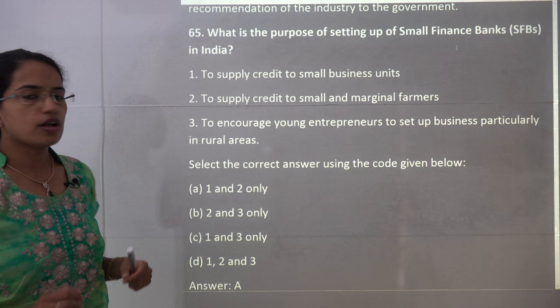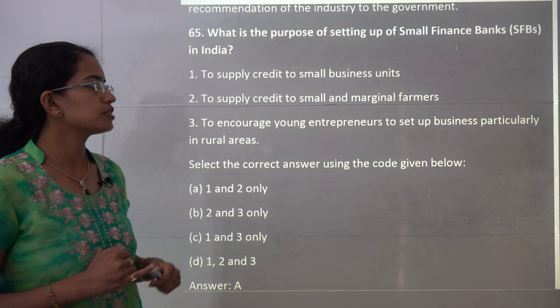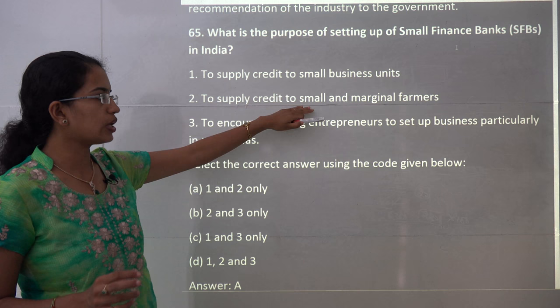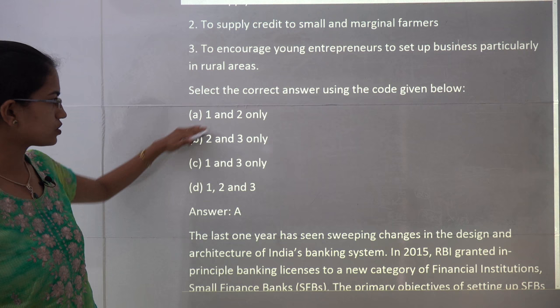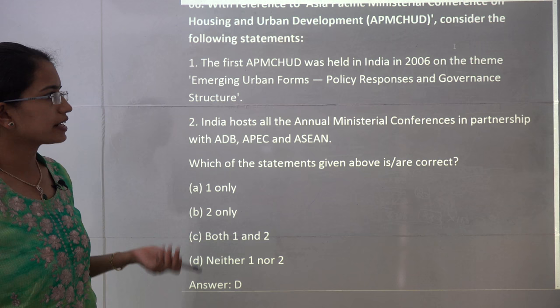The next question asks about the purpose of setting up Small Finance Banks in India. The basic idea was financial inclusion — supplying credit to small businesses, micro units, and small and marginal farmers. Statements 1 and 2 are the correct choices; it has nothing to do with young entrepreneurs. So A is the correct answer.